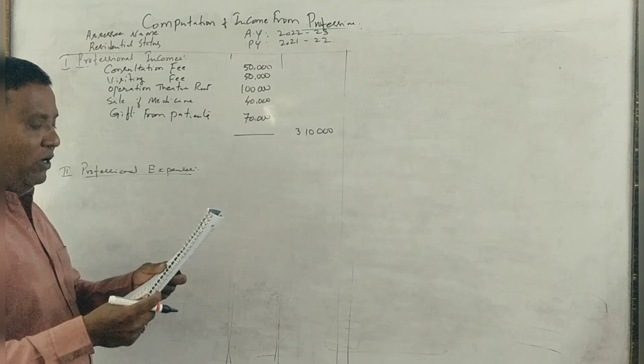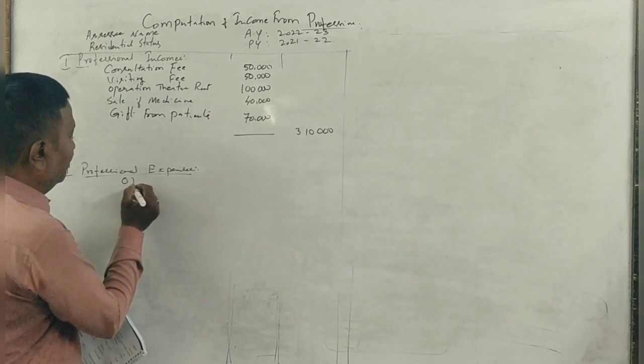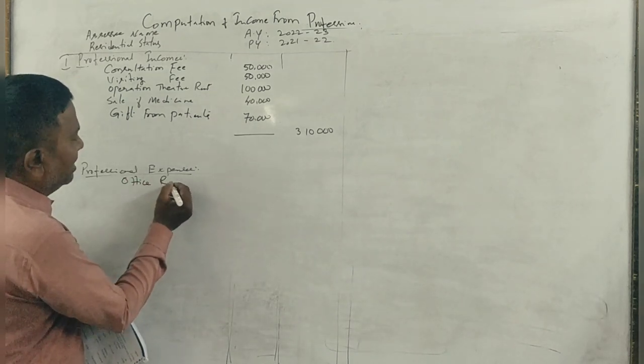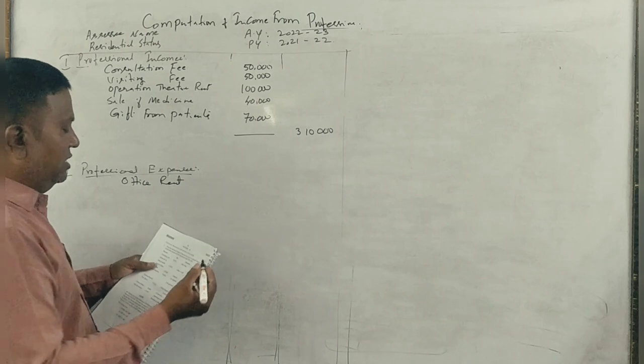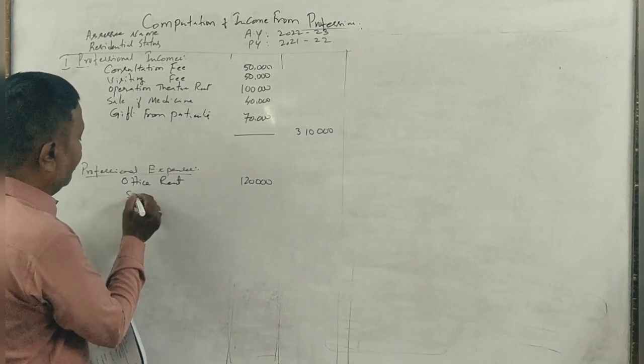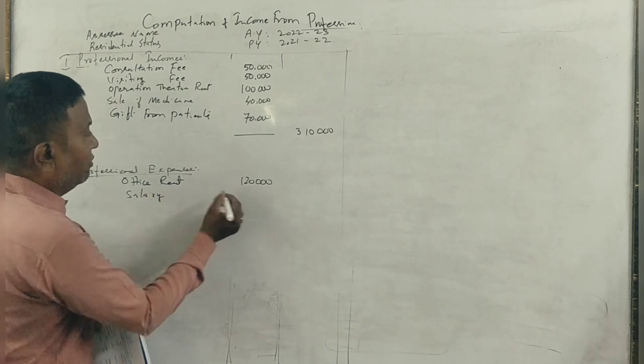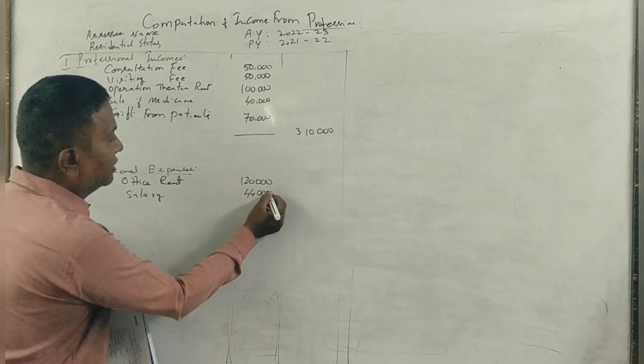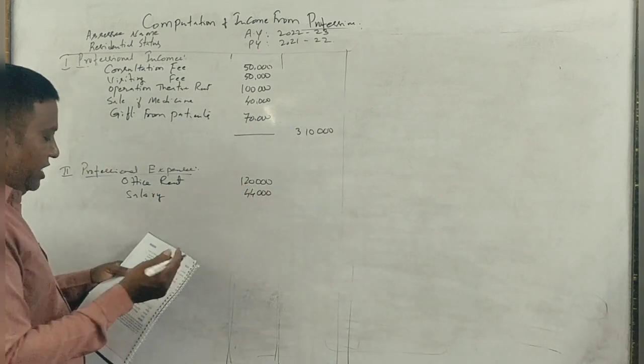This expense is for the office, the clinic. 1,20,000. Salary to staff, 44,000. That's it. This is not enough.